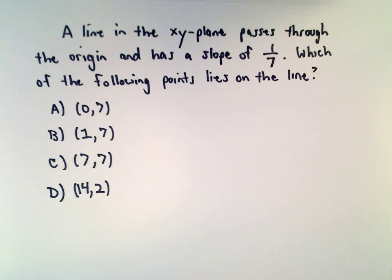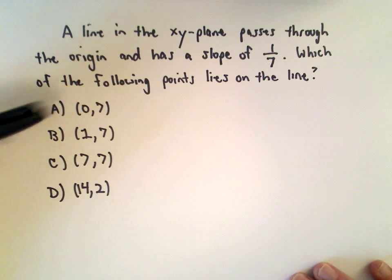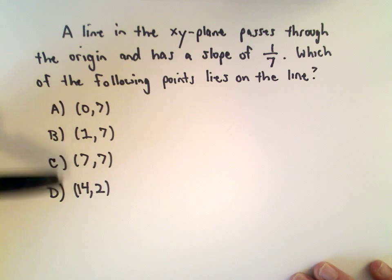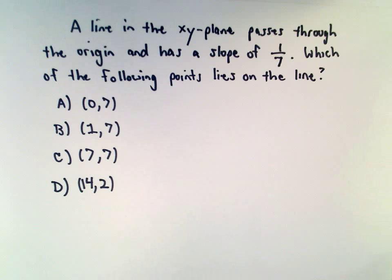In this question we're given that a line in the xy-plane passes through the origin and has a slope of 1 over 7. We want to know which of the following points lies on the line: is it (0,7), (1,7), (7,7), or (14,2)? There are different ways to do this.